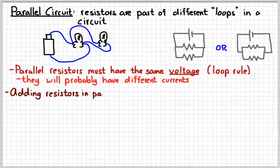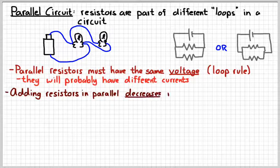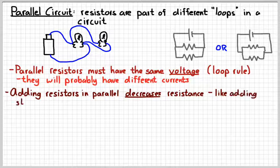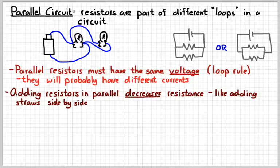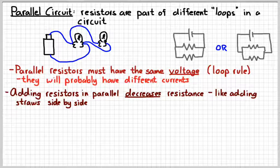When you add resistors in parallel, it decreases the equivalent resistance. An analogy, again using the straws, is like adding straws side by side. If you take two straws and bunch them together so that you can drink through both of them at the same time, side by side, you're going to be able to drink things much faster. Basically, you've decreased the resistance to fluid flow, just like parallel resistors decrease the resistance to current flow.